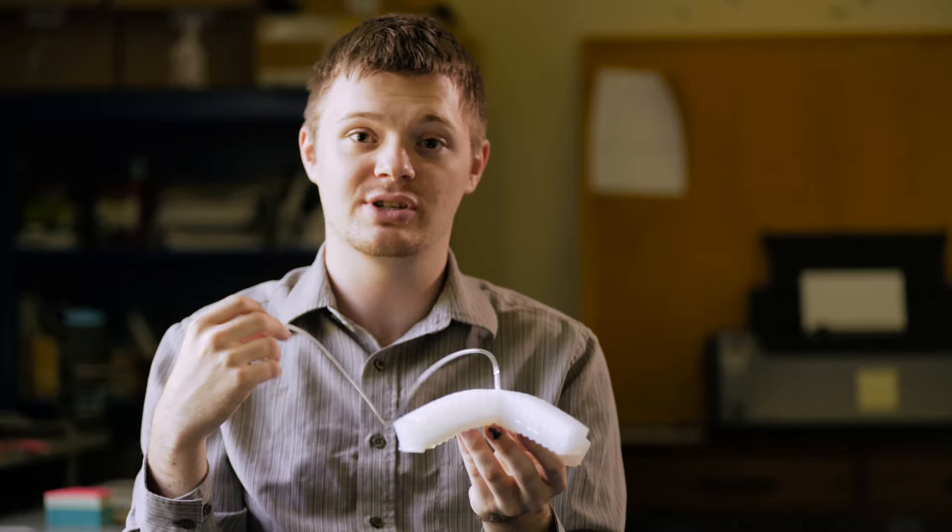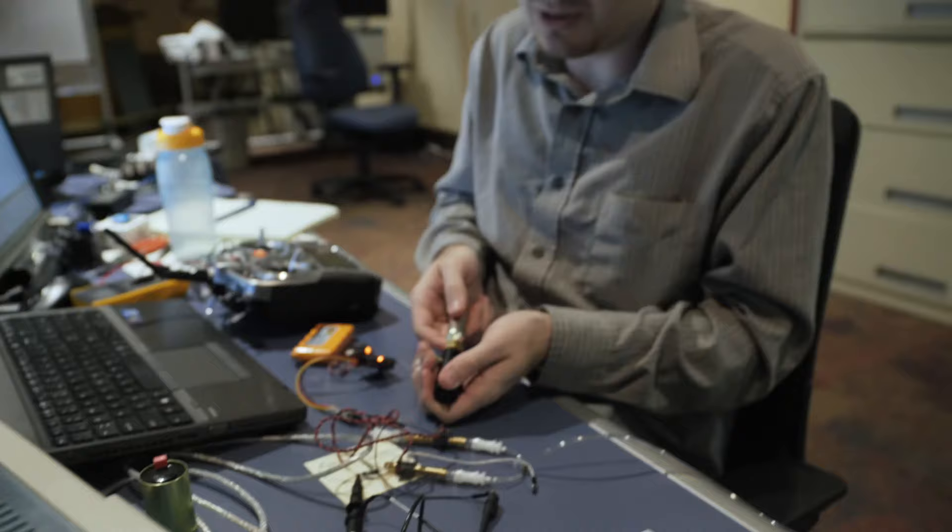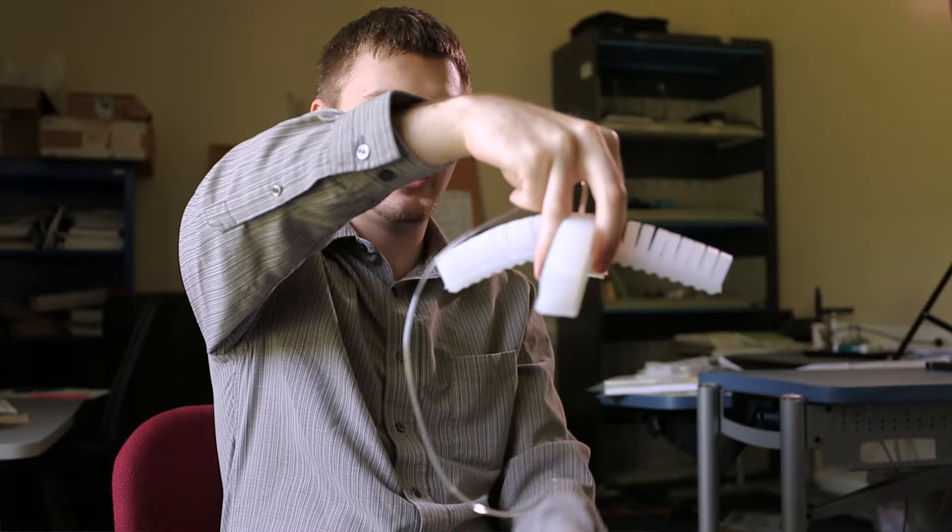We'll have this off to the side attached to our pressure source and then we're going to have a bracket right here around the center and that'll keep it attached to the drone.